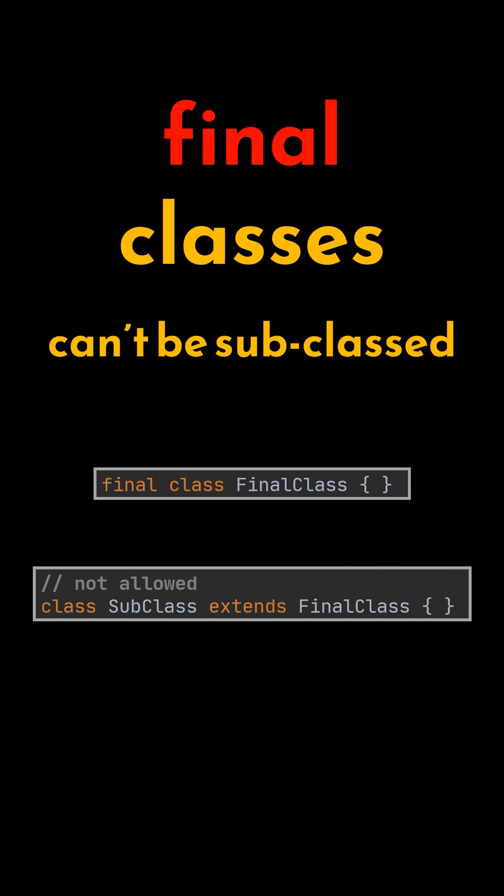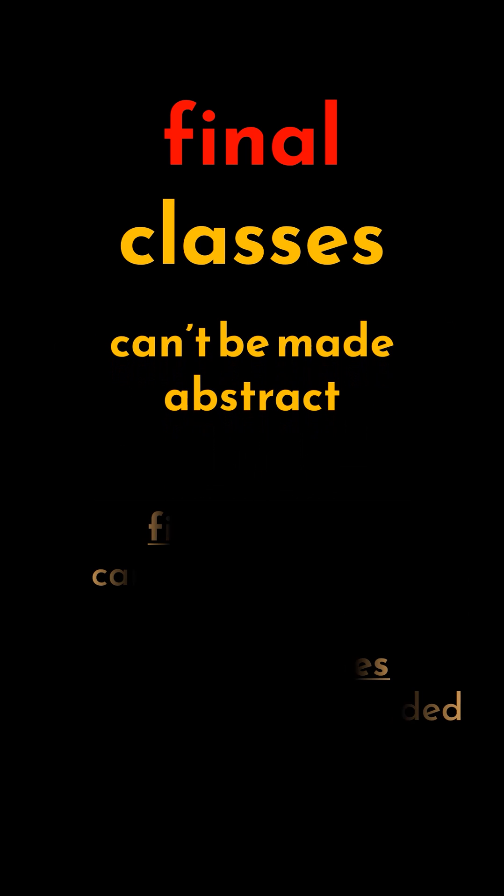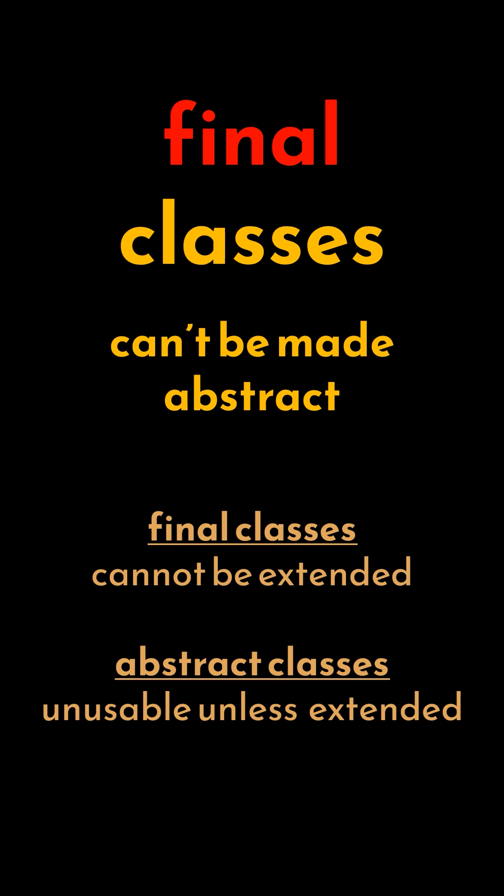For example, the final class we see here cannot be extended. Also note that final classes cannot be made abstract, as final makes a class impossible to extend, while abstract makes the class unusable unless extended.